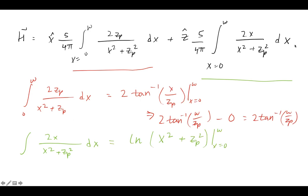For the z direction, this integral is going to give you a natural log result that needs to be evaluated from 0 to w. When you do this, you can simplify this even further down to natural log of the sum of w squared plus zp squared over zp squared.